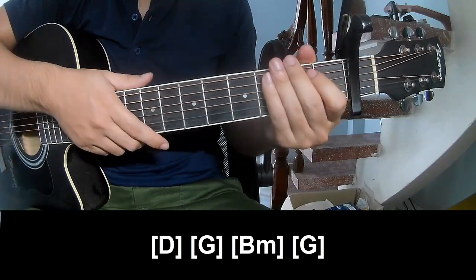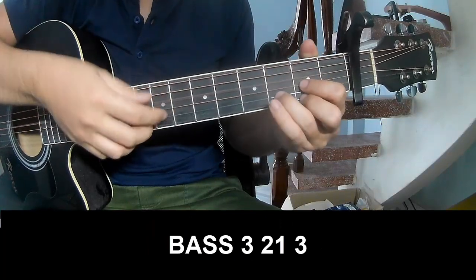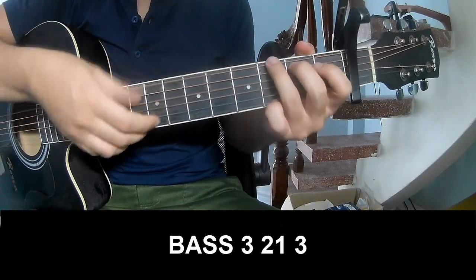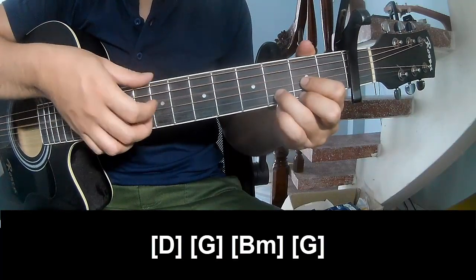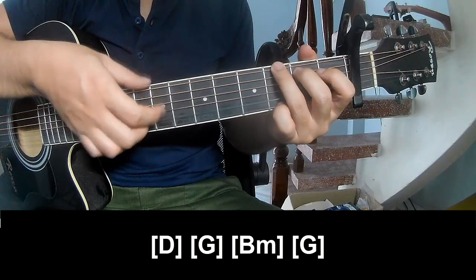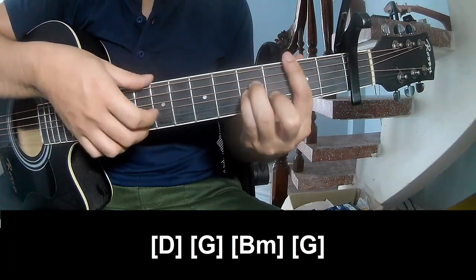The instrumental is the same way for this track. For the pre-chorus, you play the bass pattern three-two-one-three, three-two-one-three, and play along with D, G, Bm, and G.